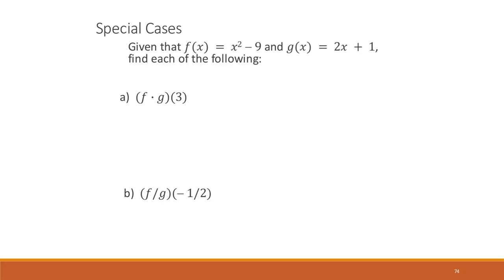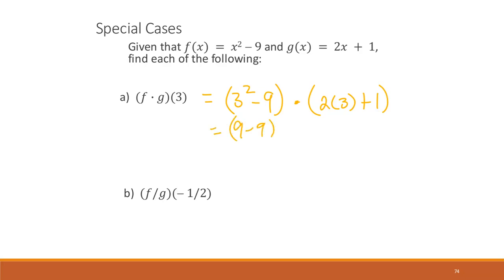We're going to work on some special cases where you might get answers that are confusing. For (f · g)(3), we compute (3² − 9)(2·3 + 1). Using order of operations: (9 − 9)(6 + 1) = 0 · 7 = 0. So the answer is simply 0 — it's not complex, not hidden. It's just 0.